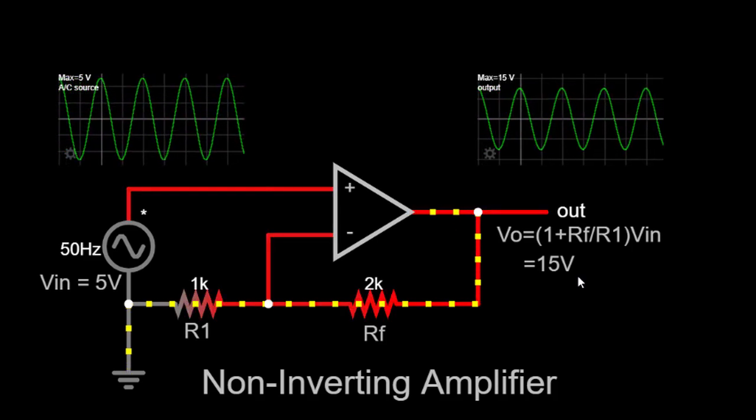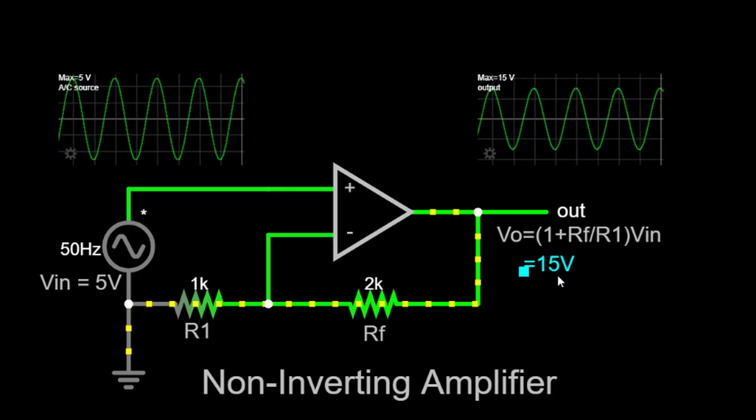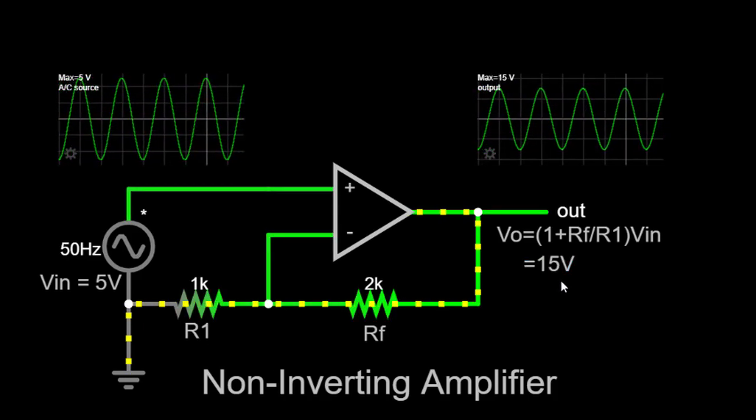The output voltage is proportional to the input voltage but amplified by a factor of 3, as determined by the gain of the non-inverting amplifier circuit.